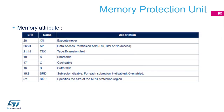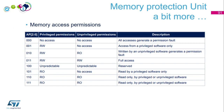For each region, there are several memory attributes. First, you can configure a region as execute-never. Then there are data access permissions — details follow in the next slide. For the TEX extension with shareable, cacheable, and bufferable, there will also be a dedicated slide. Each region has subregions that can be activated or deactivated, and you define the size of the memory region.